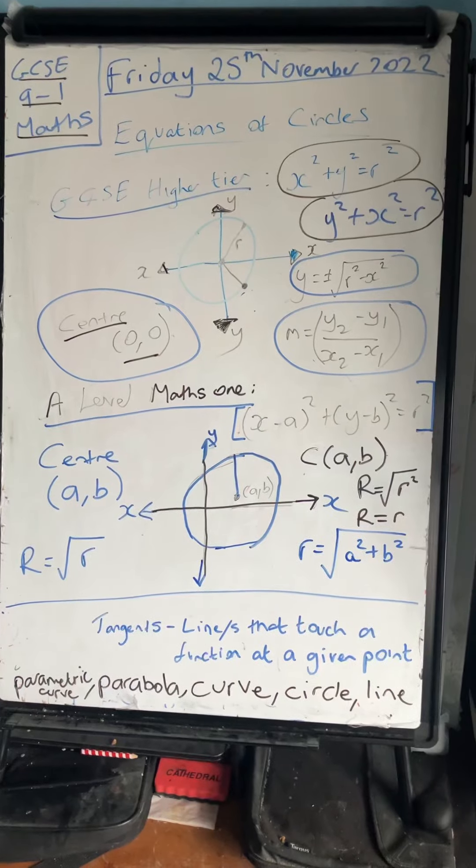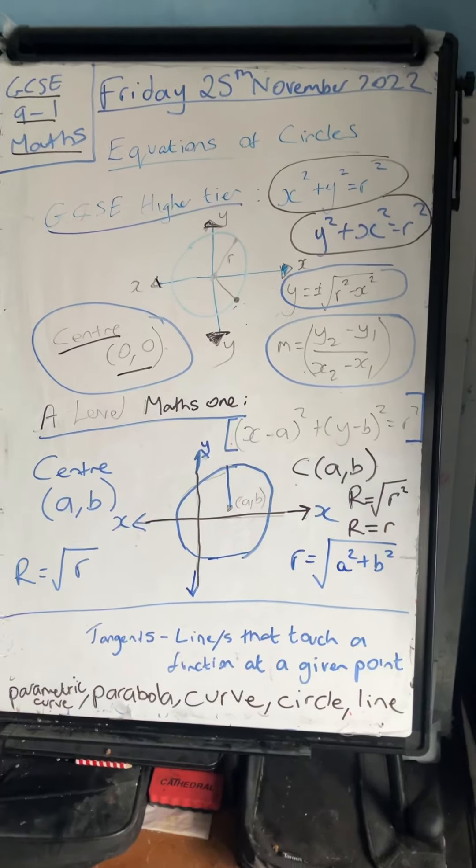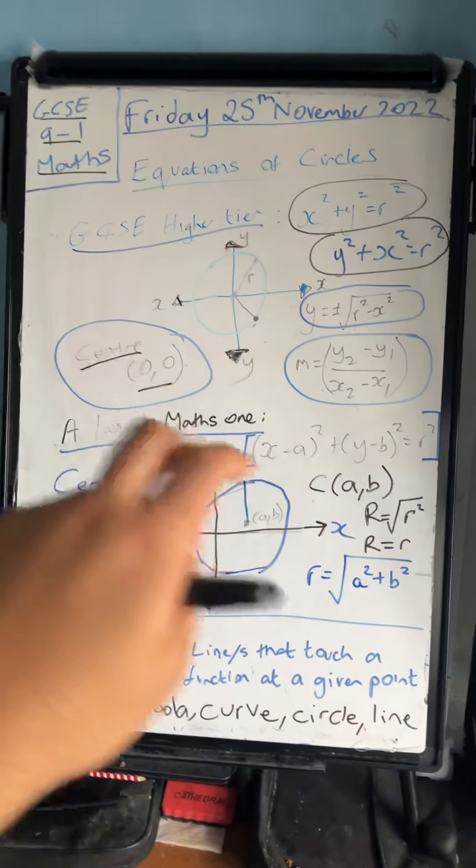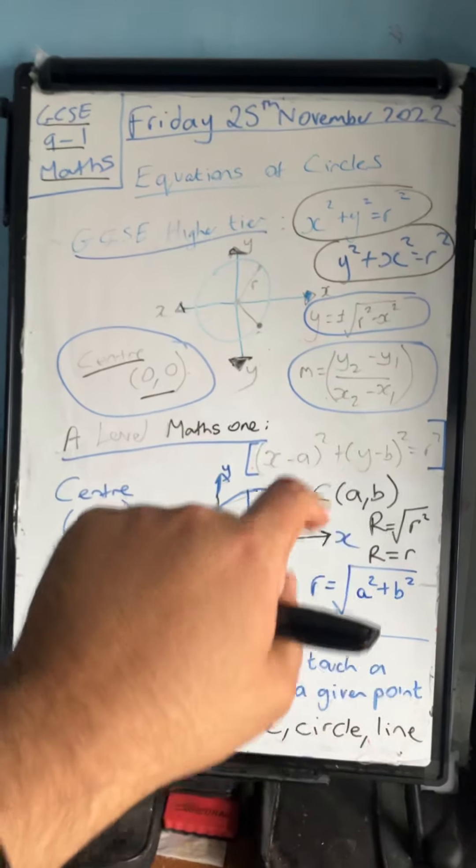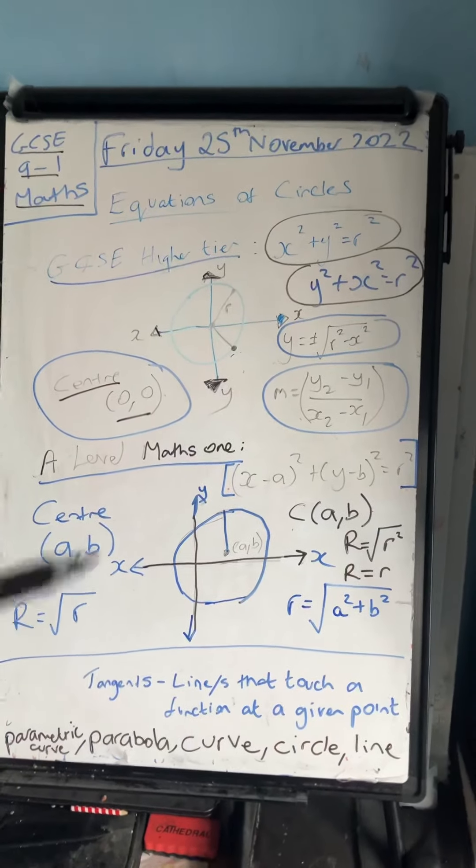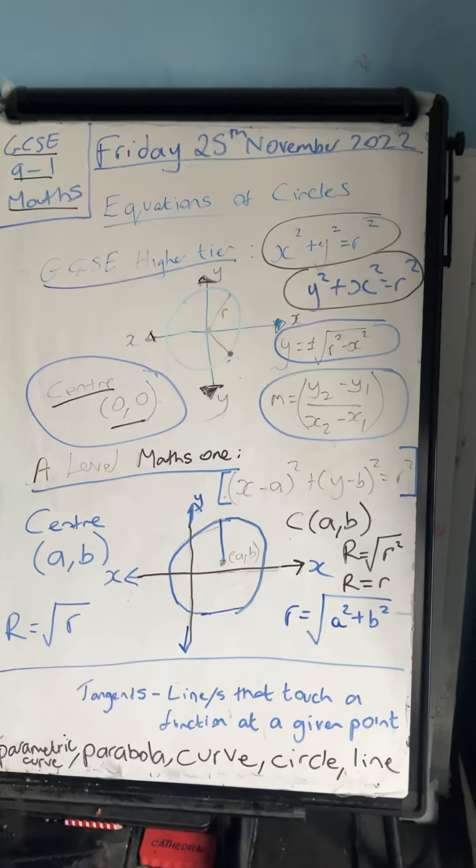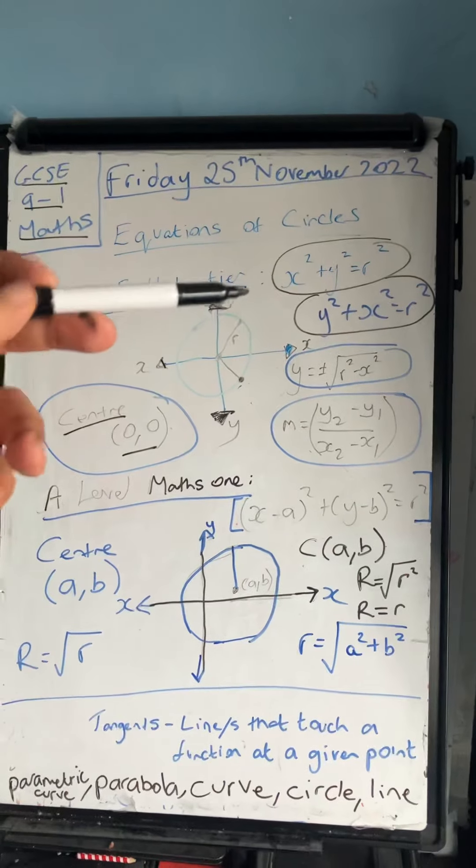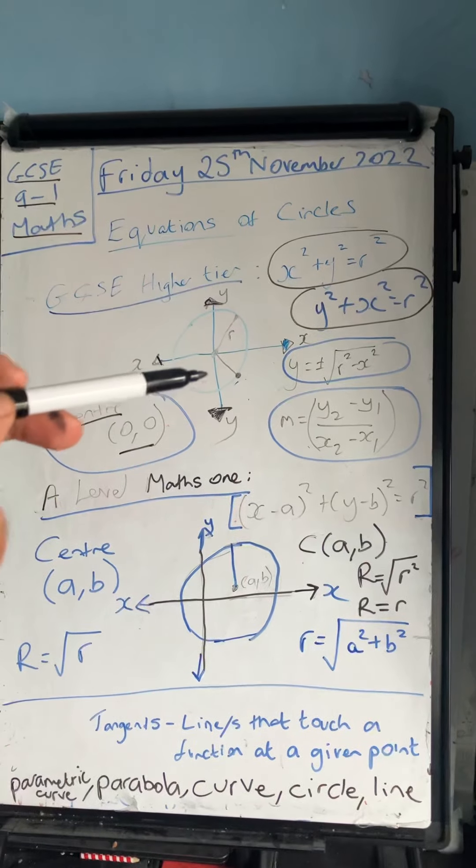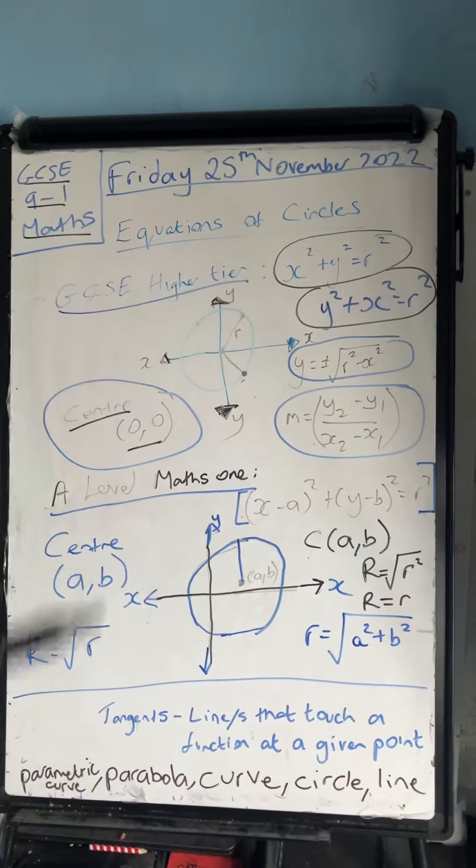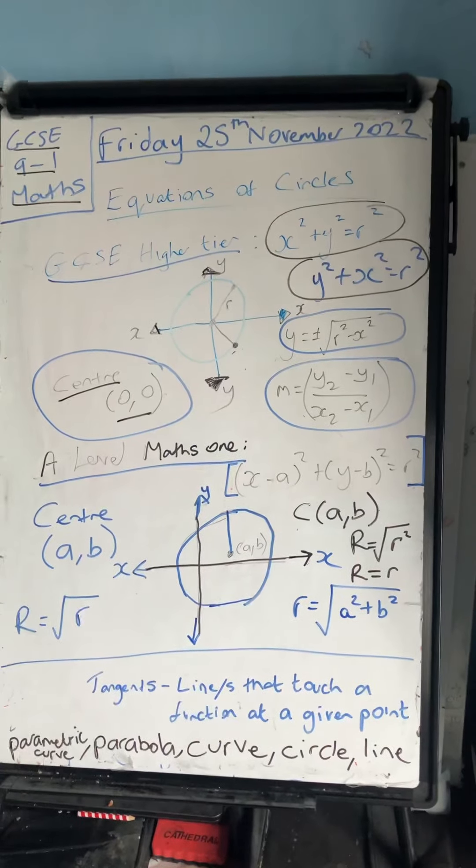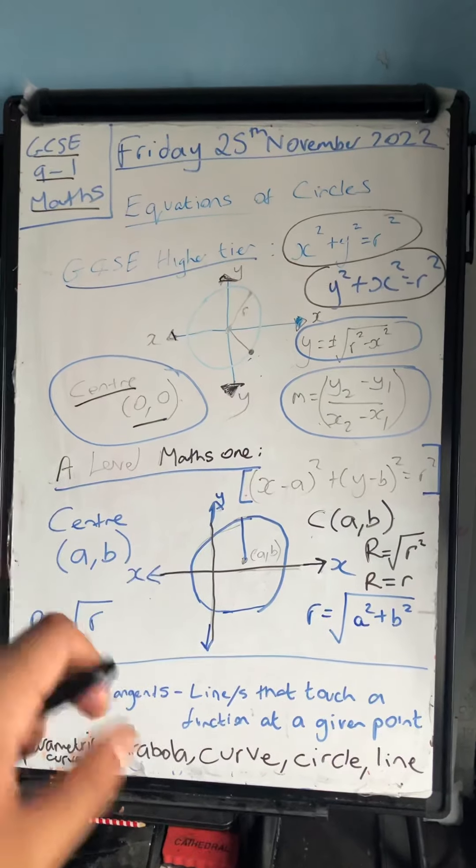The formula is y2 minus y1 over x2 minus x1 - the second y coordinate minus the first y coordinate divided by the second x coordinate minus the first x coordinate if you're given a set of coordinates. For the purpose of this you are always going to be working out the gradient from zero zero to that point, depending on what point or points you're given.